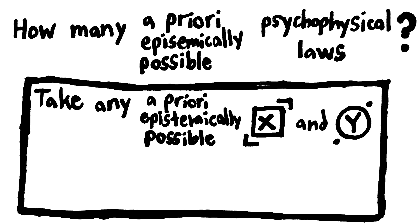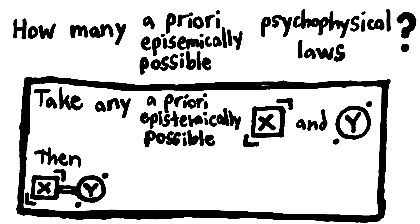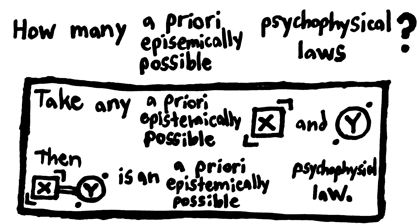Take any epistemically possible physical event, like a C fiber firing, two water molecules colliding, and so on. Then, take any epistemically possible qualia, like the smell of cheese or whatever cuttlefish experience when they see ultraviolet light. Then connect these together, and bam! You get a new epistemically possible psychophysical law.